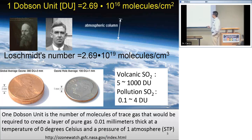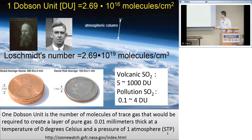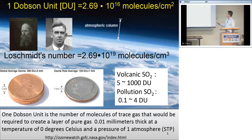Our retrieved parameter is the atmospheric total column amount — the number of molecules over a unit area in the entire atmospheric column from the surface to the top of the atmosphere. We often use the Dobson unit to represent our results. On average in the atmosphere, we have about 300 Dobson units of ozone. For the pollution we're interested in, it's often around 1 DU or even less. Volcanic SO2 can be highly variable — as little as a few Dobson units, but in some extreme cases you can have 1,000 Dobson units of SO2.